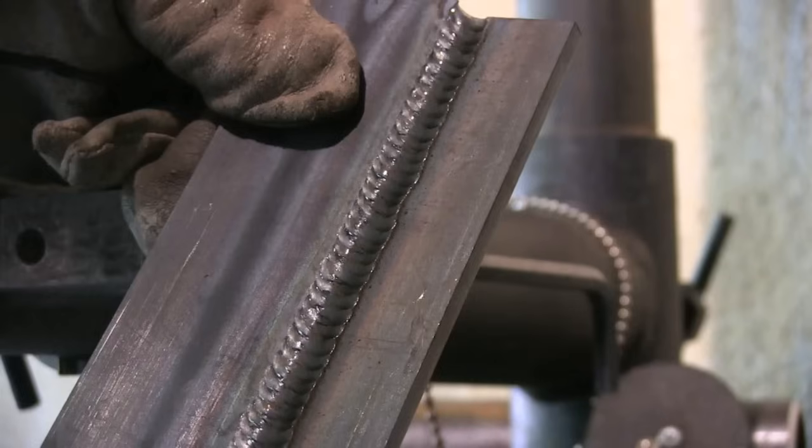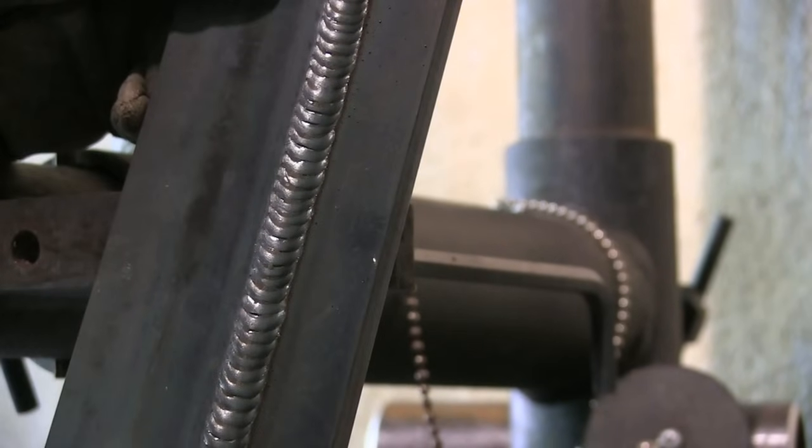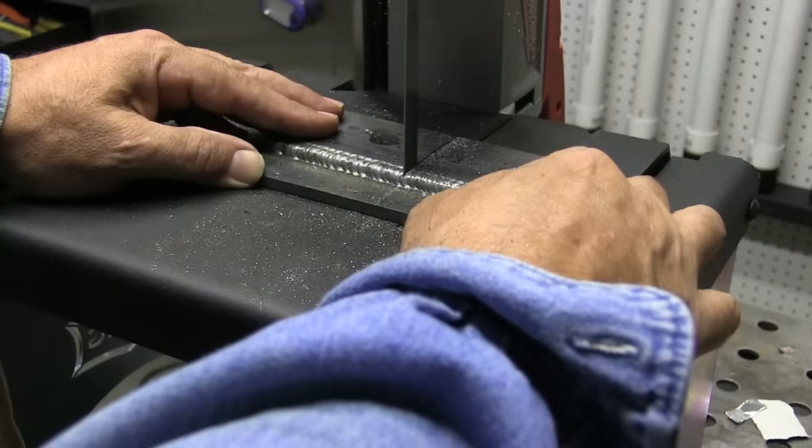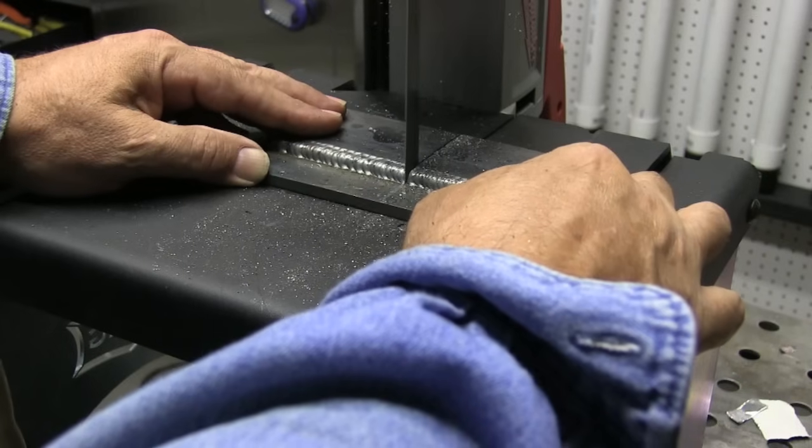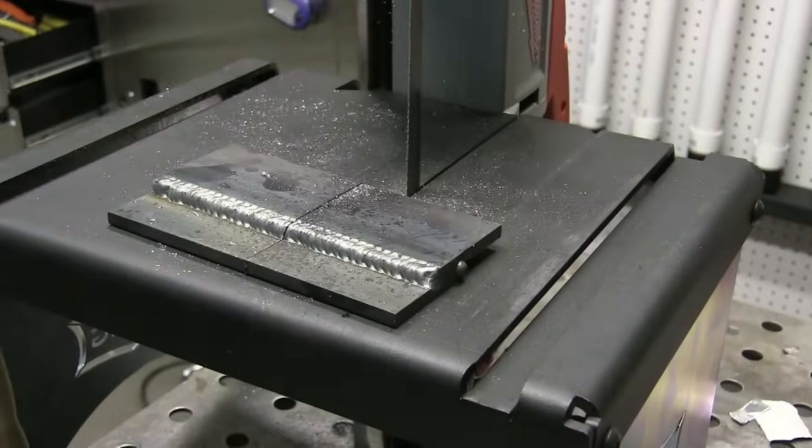Alright, these are done. They don't look tremendously different, some subtle differences. Let's go ahead and slice it down the middle and do our polishing and etching and all that stuff and see how much penetration we got, and also check and see if the convexity is anywhere close to being acceptable.